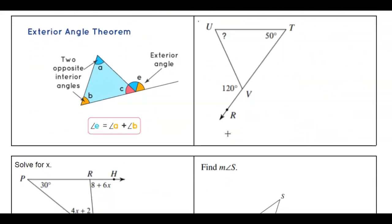The next theorem is the exterior angle theorem. If we extend one side of a triangle, we make what's called an exterior angle. That exterior angle's measure equals the sum of the two remote interior angles — the two angles inside the triangle not touching that exterior angle. There's a short proof involving the third angle C, since E and C add up to 180.